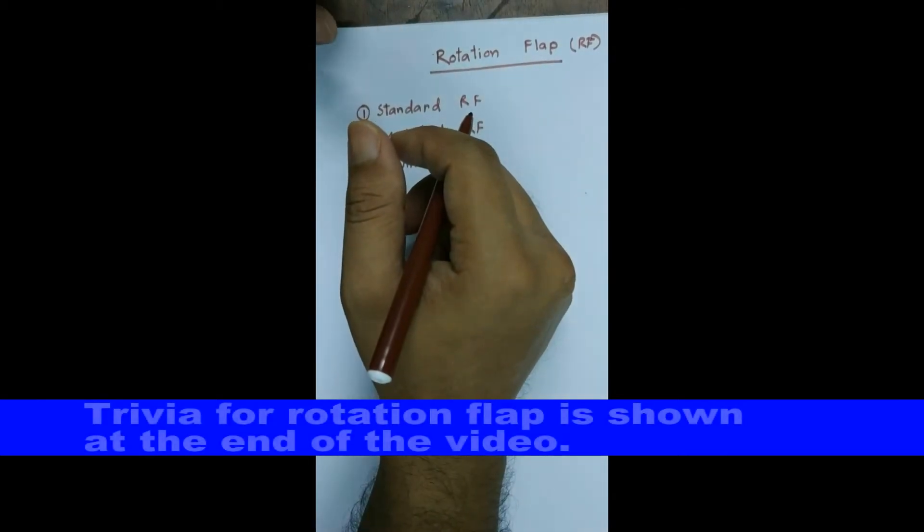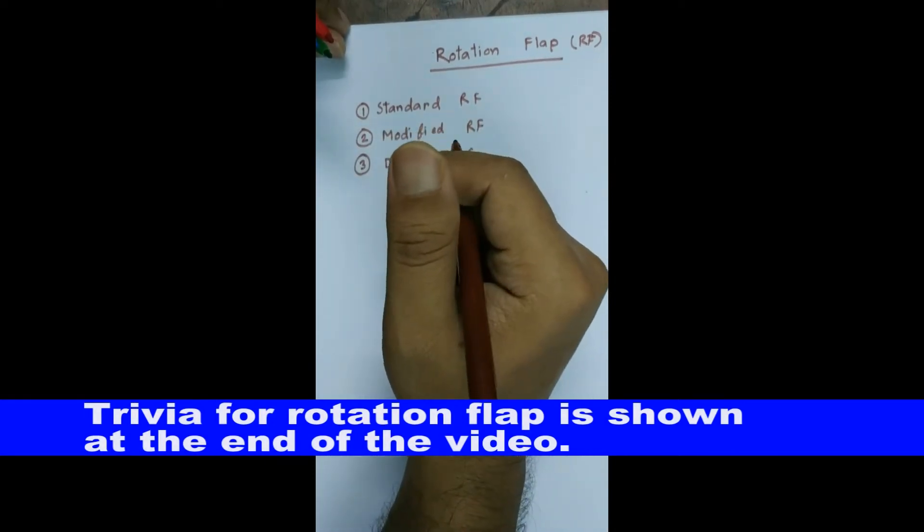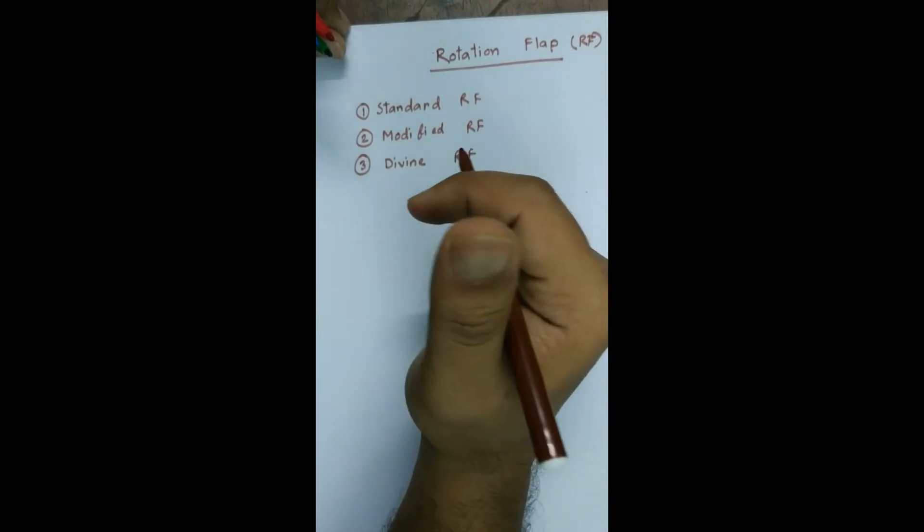Today we are going to talk about the rotation flap. It is very commonly used flap in scalp. Up to 6 cm diameter of scalp defect is usually closed with this rotation flap.